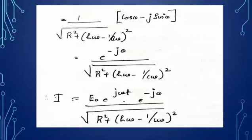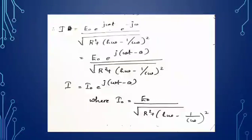Substituting back into the equation for I, we get I = E₀e^(jωt) · e^(−jθ)/√[R² + (ωL − 1/ωC)²], which equals E₀e^(j(ωt − θ))/√[R² + (ωL − 1/ωC)²], which equals I₀e^(j(ωt − θ)), where I₀ = E₀/√[R² + (ωL − 1/ωC)²].